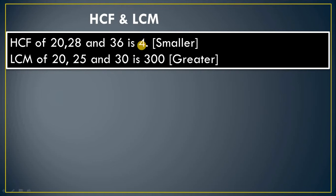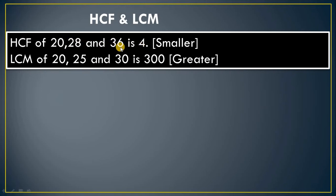In LCM, whatever answer you get — for example, LCM of 20, 25, and 30 is 300 — that number is a multiple of all three, so it will be greater. Whenever you get a question, think first whether the answer should be smaller or greater than the given numbers. In HCF the result is smaller; in LCM the result is greater. That is the important trick.